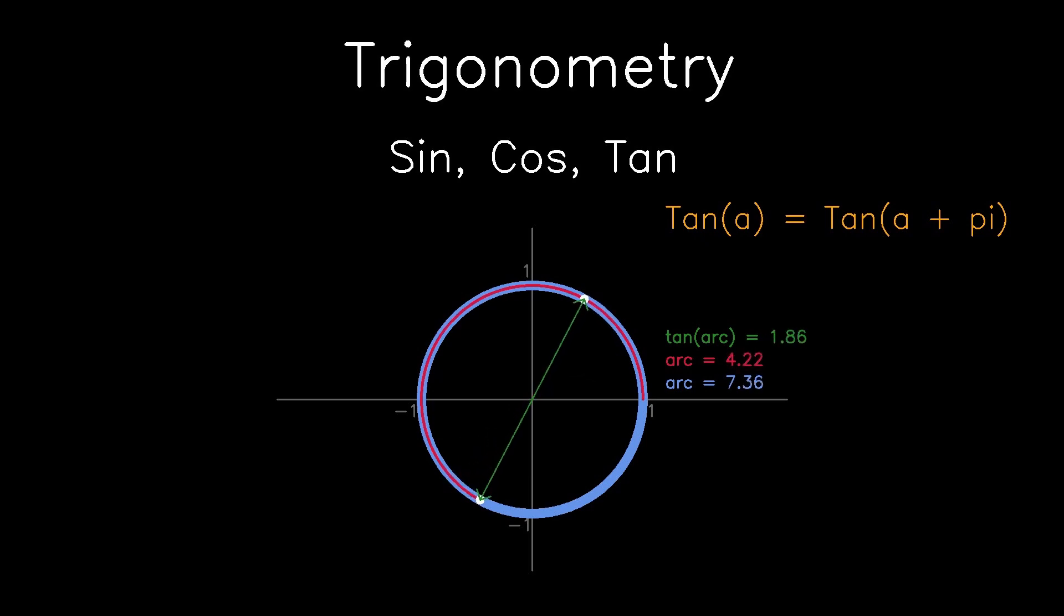We'll also notice that the gradient or the tan will be positive in the first and third quadrant and negative in the second and fourth quadrant. The gradient will be equal to zero when the line is level. And whenever the line is completely vertical, the gradient or the tan will be undefined.